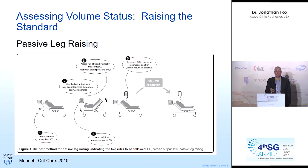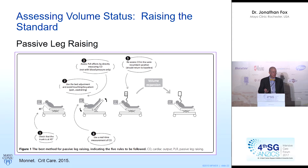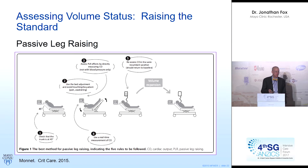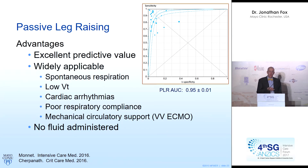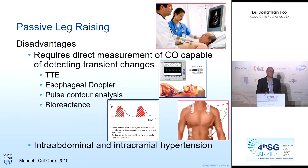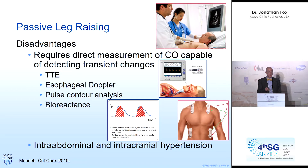One option is the passive leg raise. The patient is placed in a semi-recumbent position and a baseline cardiac stroke volume and cardiac output is obtained, typically by transthoracic echocardiography. The patient is then quickly placed in a fully recumbent position with legs elevated and the measurement is repeated. Volume from the peripheral circulation is redistributed to the central circulation, and you may get an increase in stroke volume and cardiac output. It has excellent predictive value, is widely applicable, and requires no exogenous fluid administration.